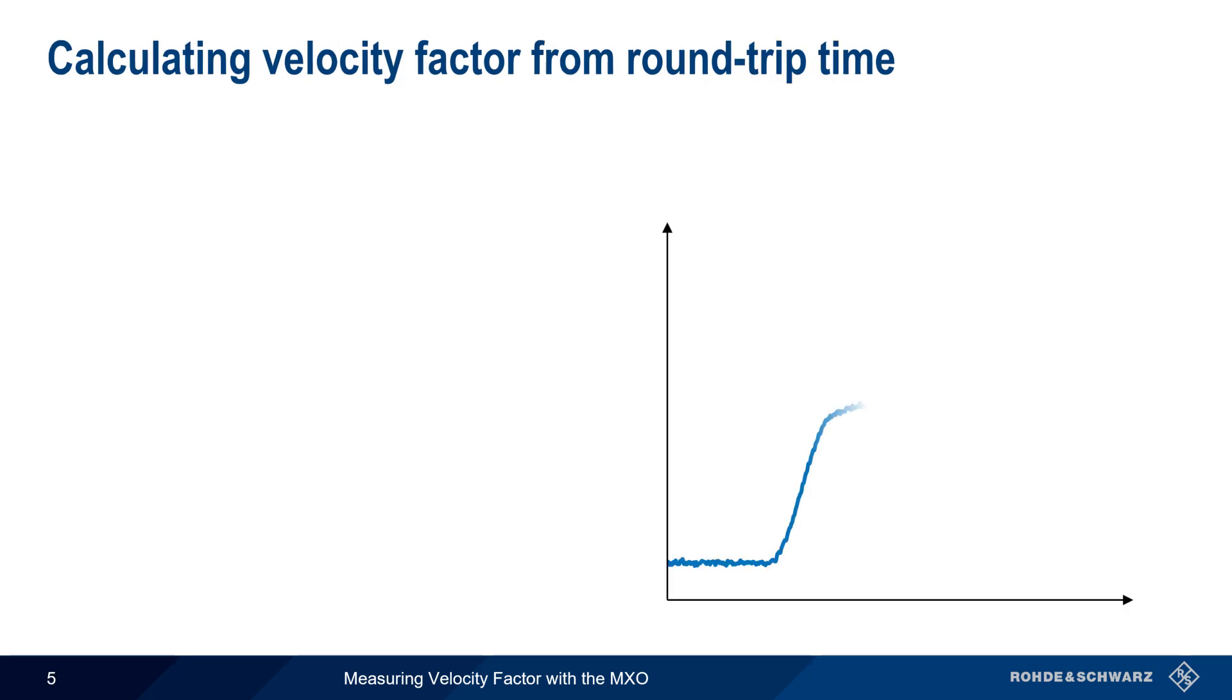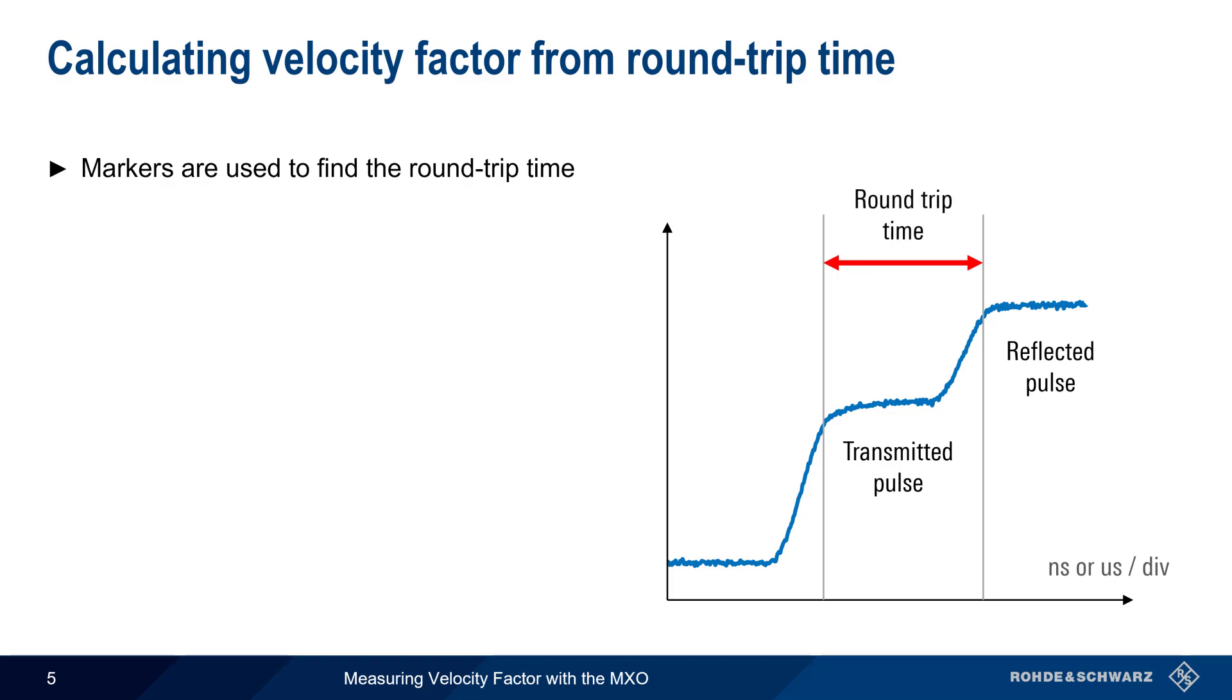Here we see an oscilloscope capture, showing both the transmitted pulse as well as the reflected pulse. Note that the scope's time base will need to be on the order of nanoseconds, or low microseconds, for most cable lengths. Markers are used to find the round trip time, and one-way time is simply half of this round trip time.